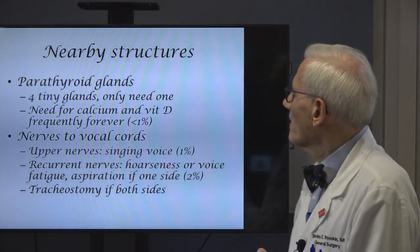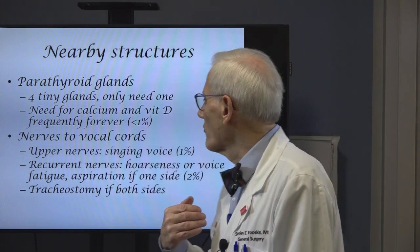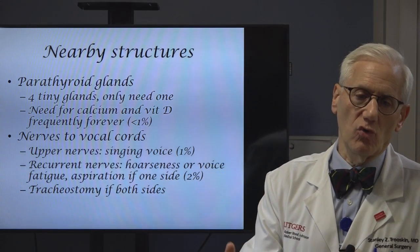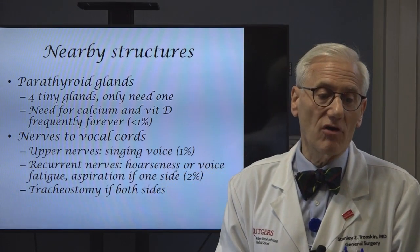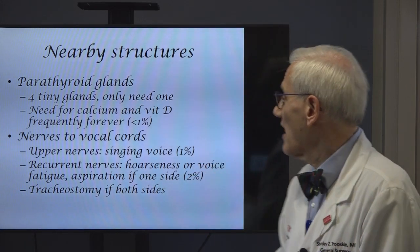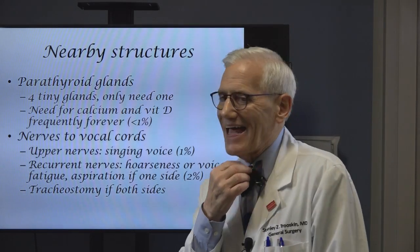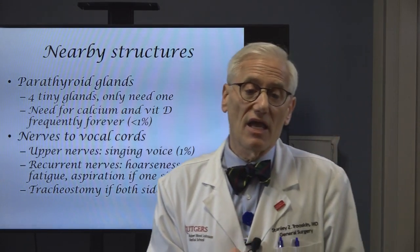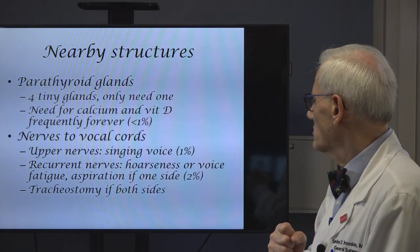Nearby structures. One of them are the parathyroid glands — these tiny glands nearby, sometimes inside the thyroid, sometimes behind it, above or below, that control the amount of calcium in the blood. If all four of those are injured or removed, you could have to take calcium and vitamin D three or four times a day forever. What's the chance that's going to happen? Less than one percent. You only need one of these, and most people have four. There are nerves that go to the vocal cords — there are nerves at the top that tense up the vocal cords. If you can sing alto soprano, you need those nerves. The chance that I'm going to injure one of those nerves? Less than one percent.